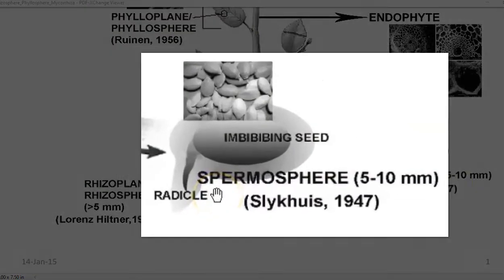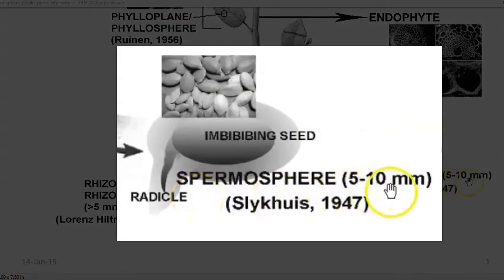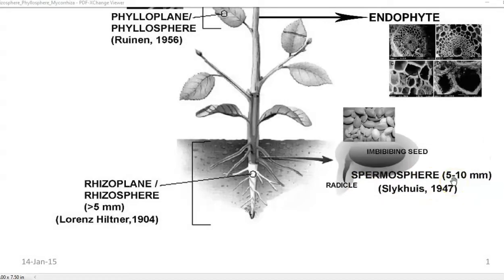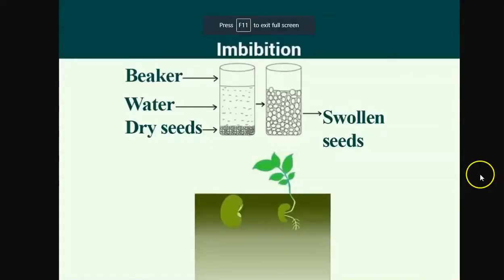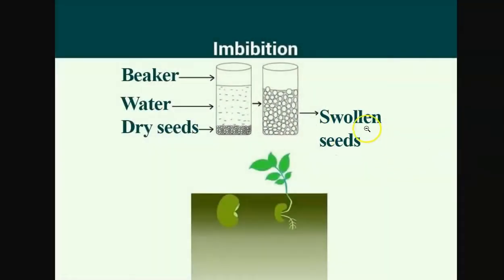The spermosphere is a zone extending up to 5 to 10 millimeter region from the seed — that is from an imbibed seed. An imbibed seed is one that has been soaked in water overnight, causing the seeds to swell up. These swollen imbibed seeds further produce the radicle root as well as the shoot region.